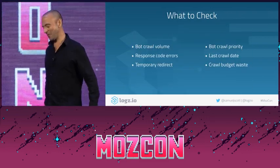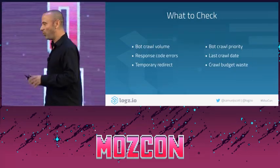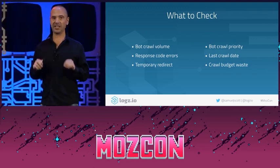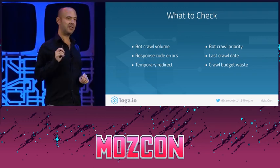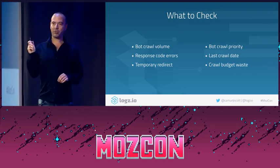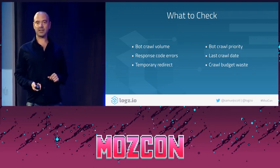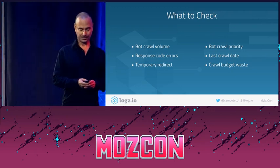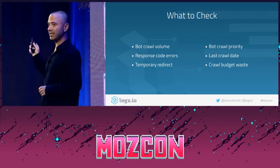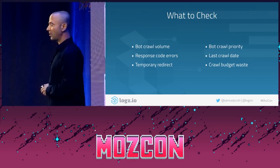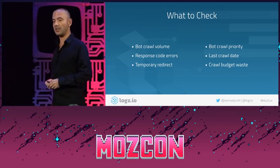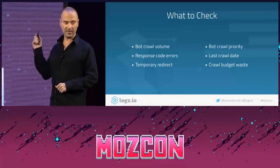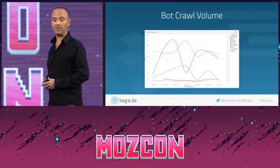Now here's the fun stuff. You want to analyze your server logs to see what's going on. What specifically do you need to look for? What problems can arise, and how can you fix them? These six things are the six major things to check in your server logs when you do technical SEO in that specific context. We'll take these one by one.